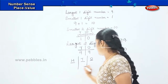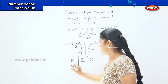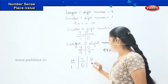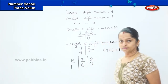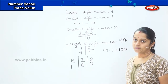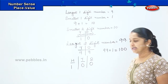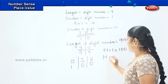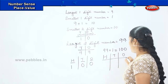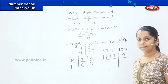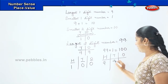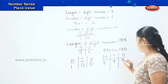How will I write one hundred? I will write one in the H column, zero in the T column, and one more zero in the O column. How will you write nine hundred and ninety-nine? Nine in hundreds, nine in tens and nine in ones.